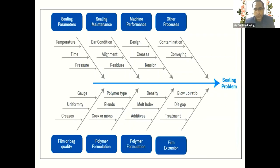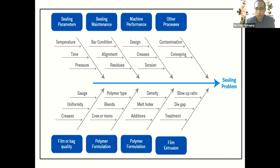I made a small chart describing all types of parameters involved in the complete sealing process. I would like to request all attendees to please take a screenshot of this slide. It involves machinability, films, resins, sealing parameters set in the machine, polymer formulation, and the final output.